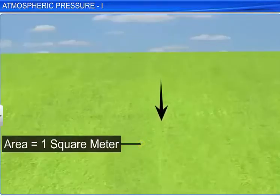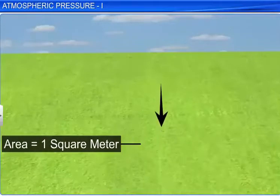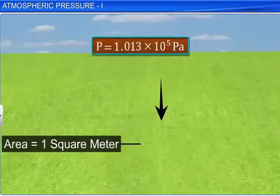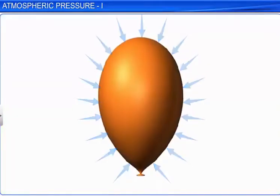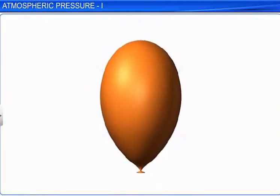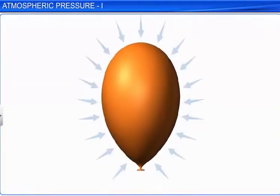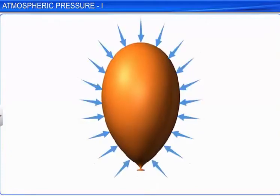The approximate value of atmospheric pressure on the Earth's surface is 1.013 × 10⁵ pascal. The atmospheric pressure at a point is the same in all directions.